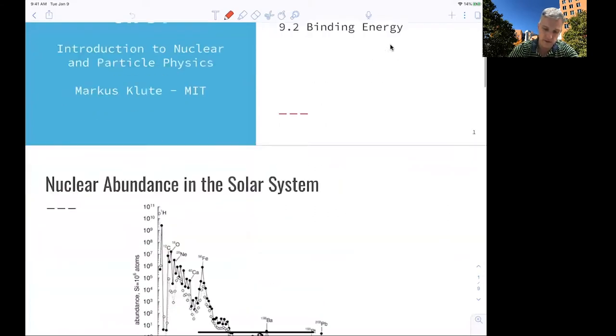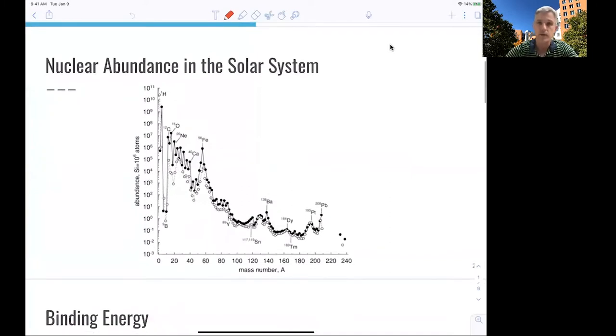But before we get started on this topic, I would like you to have a look at this diagram that shows nuclear abundances in our solar system. So how many atoms of the various types are present in our solar system? And you see this super interesting structure.